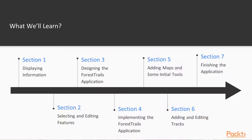This video provides a summary of the entire course. There are seven sections in this course. In Section 1, Displaying Information, you will learn how to use PyQGIS to display information on a map. In Section 2, Selecting and Editing Features, you will learn how to add functionality to a standalone PyQGIS-based application that lets the user select, add, edit, and delete geospatial features.